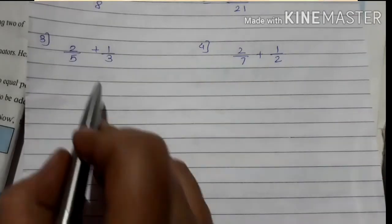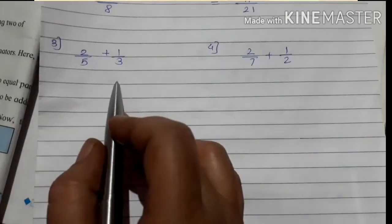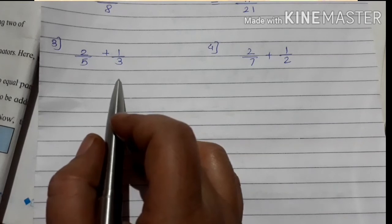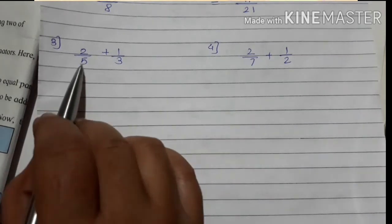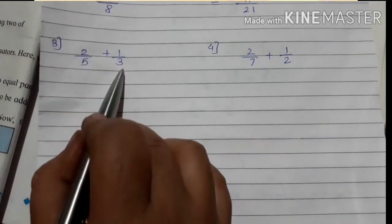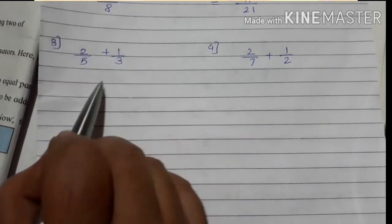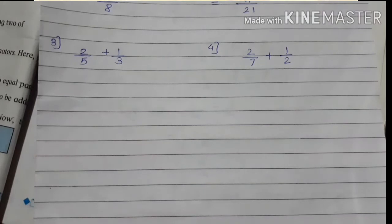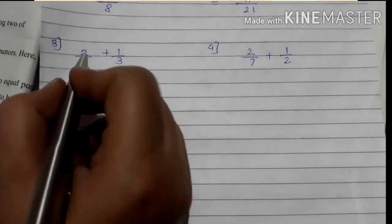Now the third one: 2 upon 5 plus 1 upon 3. Observe the denominators — here is 5 and here is 3. Can we convert 5 to 3? Is 3 in the 5 times table? No. Is 5 in the 3 times table? No. In this case we have to use cross multiplication — the same method we used in the previous problem set.